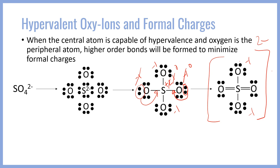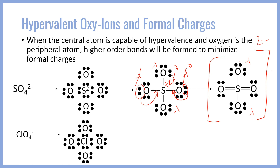Another possible ion that has this problem is the perchlorate ion, ClO4-. Chlorine is going to be our central atom because it's singular. We're going to take our chlorine, which has seven electrons, and add one electron to give us a full eight for the octet. Just like in SO4 2-, each oxygen will attack and take one lone pair to give us a structure with four single bonds.